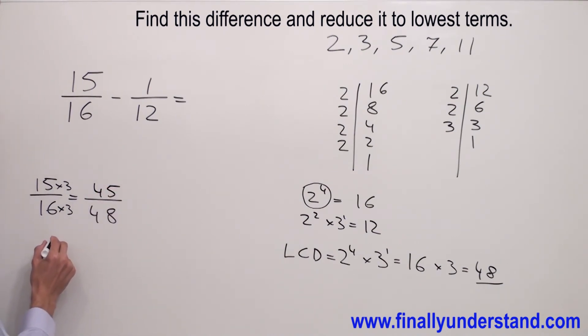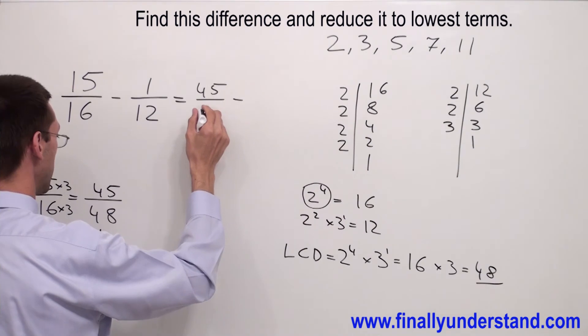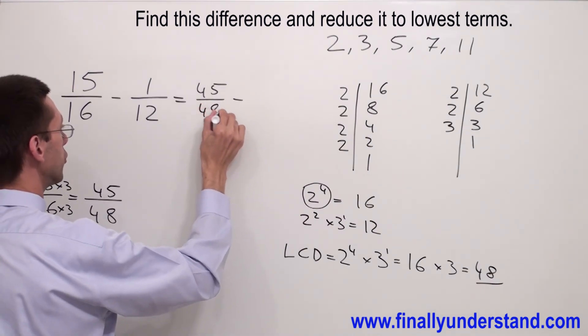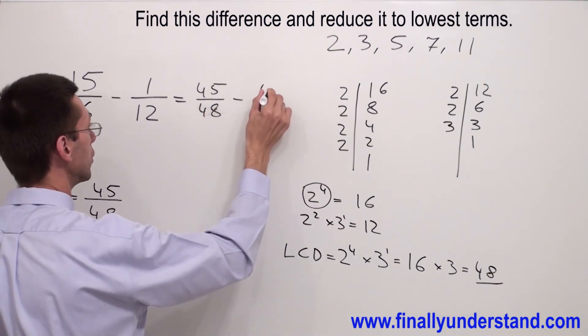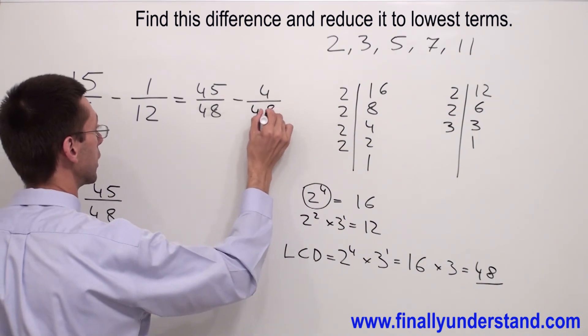Now, let's check another fraction. I have 1 over 12, and the common denominator is 48. We just found it. By what number I have to multiply 12 to get 48? I have to multiply by 4. Whatever I did in the denominator, I have to do also in the numerator. 1 times 4 is 4. That's why I got 45 over 48 minus 4 over 48.